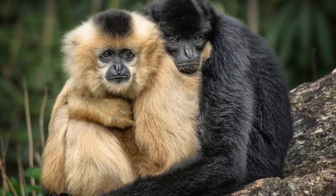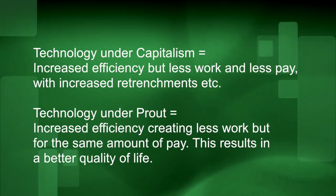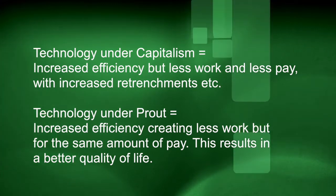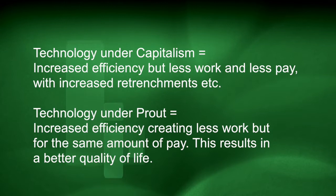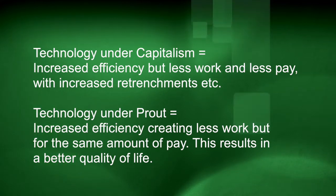So this wasn't a Luddite vision. Prout fully supports the use of science and technology, but this should never be at the detriment of the environment. According to Prout, plants and animals also have their right to existence. Science should be used to ensure a better environment and a better quality of life for all, and should never be used just to create wealth for a few or for mass destruction such as in warfare. It should be noted that under capitalism, less work due to the advances of technology means less pay, if not retrenchment. However, under Prout, it means less work for the same amount of pay. This fosters a much richer, happier and more meaningful society.